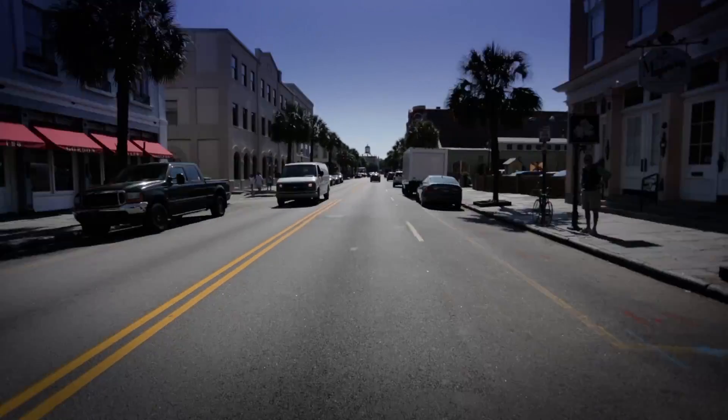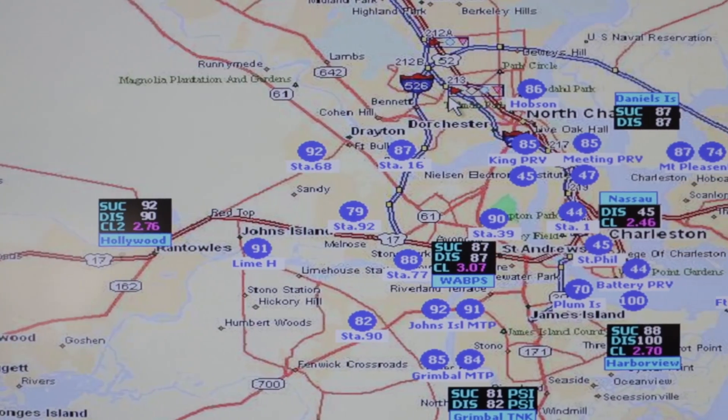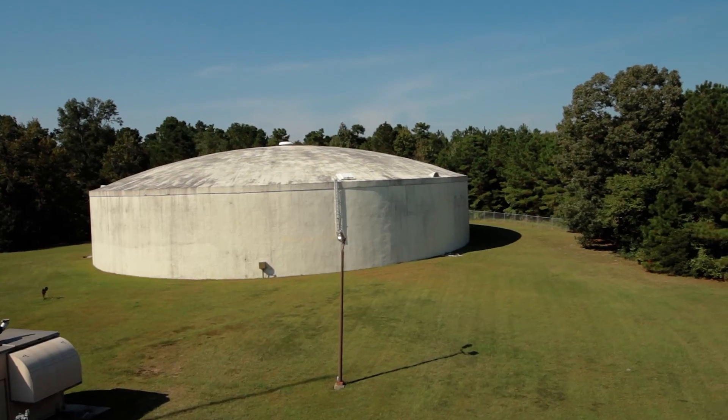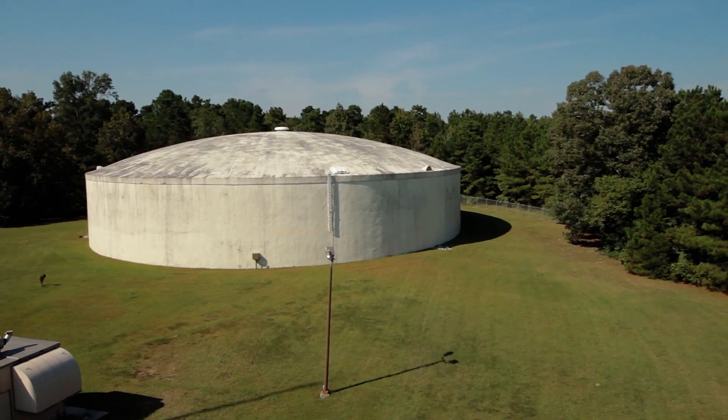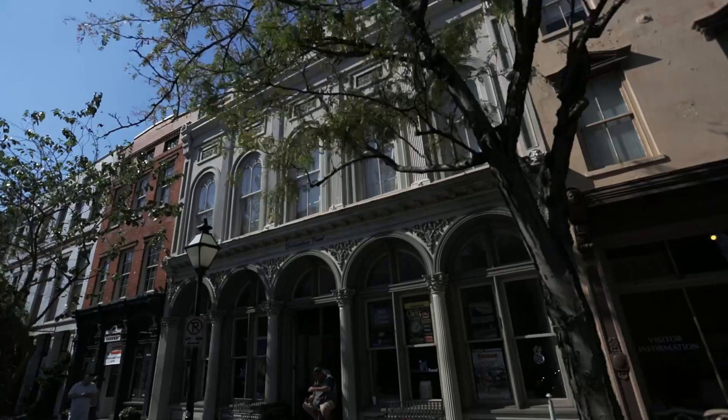There are more than 1,700 miles of distribution pipes in Charleston Water's system. Water is pumped through these pipes into holding tanks in various parts of the system to act as a buffer during times of high flow, such as in the morning when people are preparing for work and school.